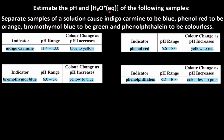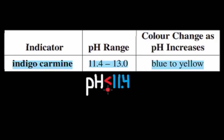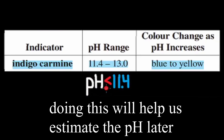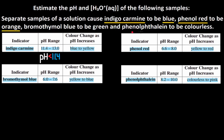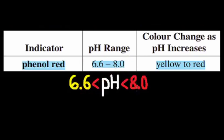Estimate the pH and H3O+ concentration of the following samples. Separate samples of a solution cause indigo carmine to be blue. The color change for indigo carmine is blue to yellow — blue is on the left side, and 11.4 is on the left side. So for indigo carmine to be blue, the pH should be less than 11.4. It tells us that phenol red is orange. Orange is a mix of yellow and red, so the pH is between 6.6 and 8.0 — the pH is greater than 6.6 but less than 8.0.